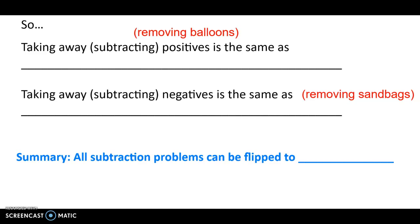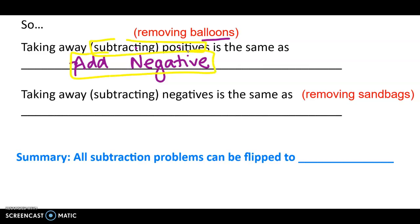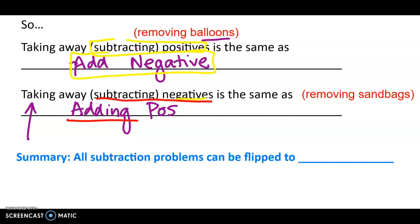Taking away — subtracting — or removing a balloon, that's a positive. Subtracting a positive is going to have the same effect on Mr. Frog as if we were to add a sandbag. So the key here is that subtracting a positive is the same as adding a negative. And taking away or subtracting a negative — removing a sandbag — if I remove a sandbag he's going to go up, and that has the same effect as adding a balloon, which is a positive. So subtracting a negative is the same as adding a positive.